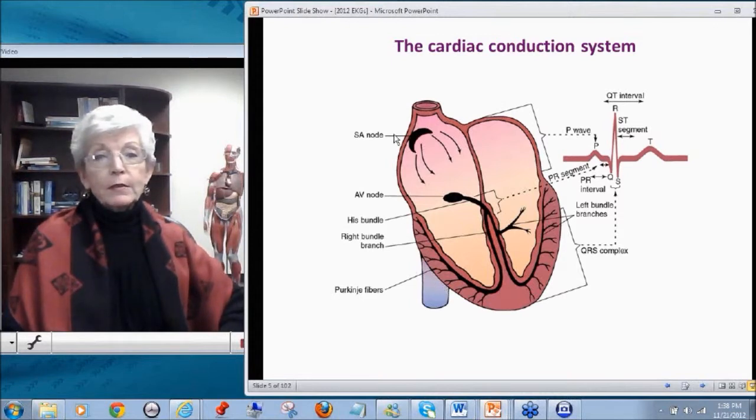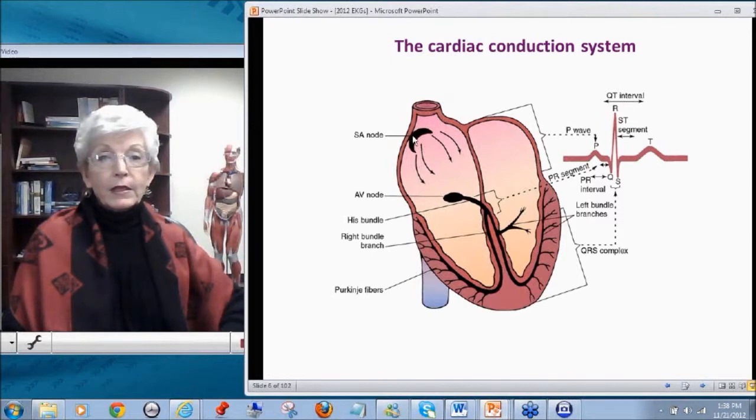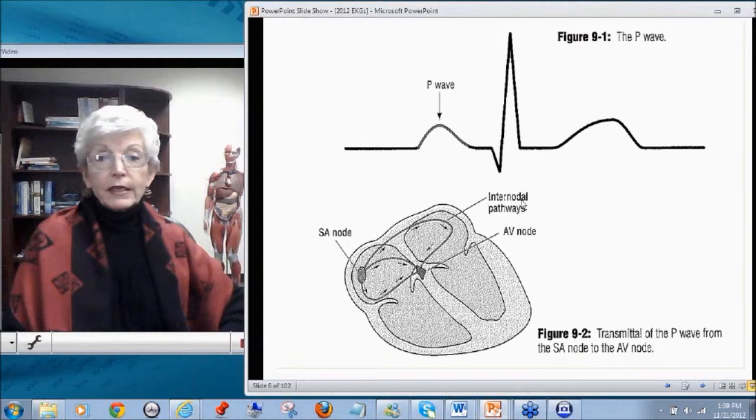So the cardiac conduction system, we start off at the SA node, initiating a beat. This is high in the right atrium. It goes from high in the right atrium, the impulse goes to the AV node where it's delayed a little bit so that all the atrial beats can get there at the same time. Then it is fired through the His bundle down the right and left bundle branches and terminating out of the Purkinje fibers.